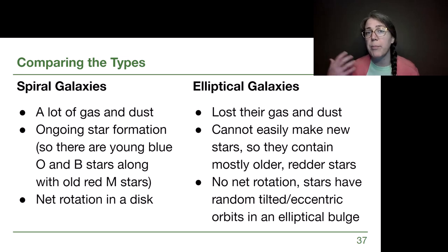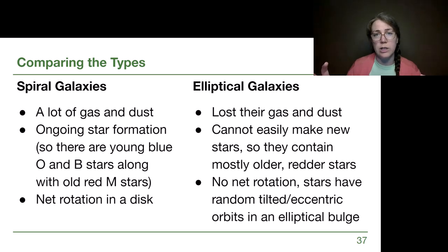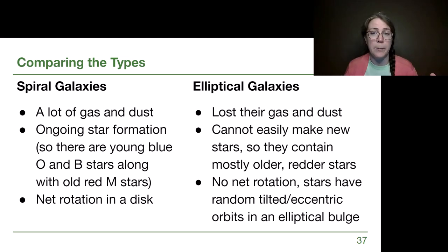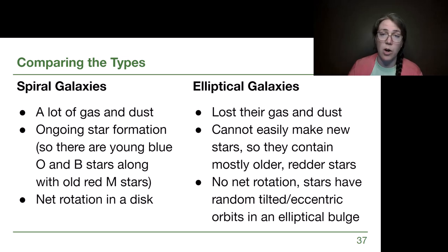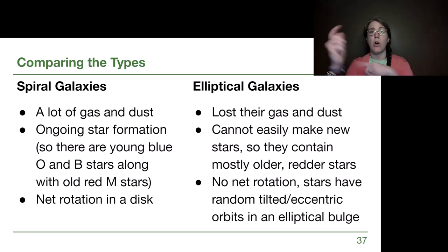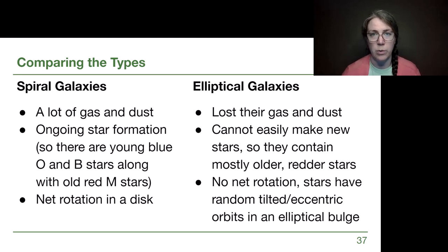Elliptical galaxies are not making new stars. The stars that are there will live their lives, then explode or make planetary nebulae, and just fade away — they don't have gas and dust to make new stars. What we see in those galaxies tends to be the lower half of the HR diagram main sequence: older, redder stars. We've lost all the O and B stars, and there's no net rotation — just orbits in all different directions, similar to the central bulge of the Milky Way.